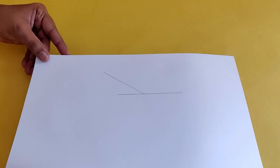Draw a straight line on a piece of paper and draw an acute angle to this line. We will consider this line as our incident ray.